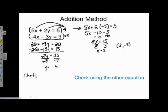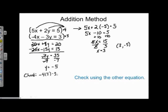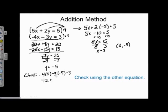The last step is to check our answer using the other equation — the one we didn't use to find x. Substituting into the second equation: negative 4 times 3 minus 3 times negative 5 equals 3. Negative 4 times 3 is negative 12, and negative 3 times negative 5 is positive 15. Negative 12 plus 15 equals 3, and 3 equals 3 — it checks out. That's it, thanks for watching.